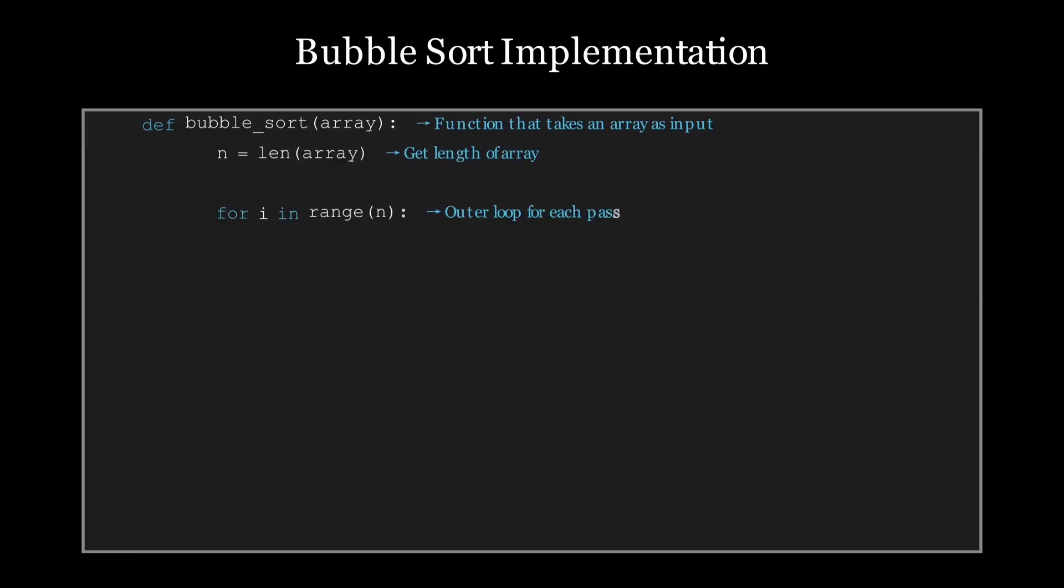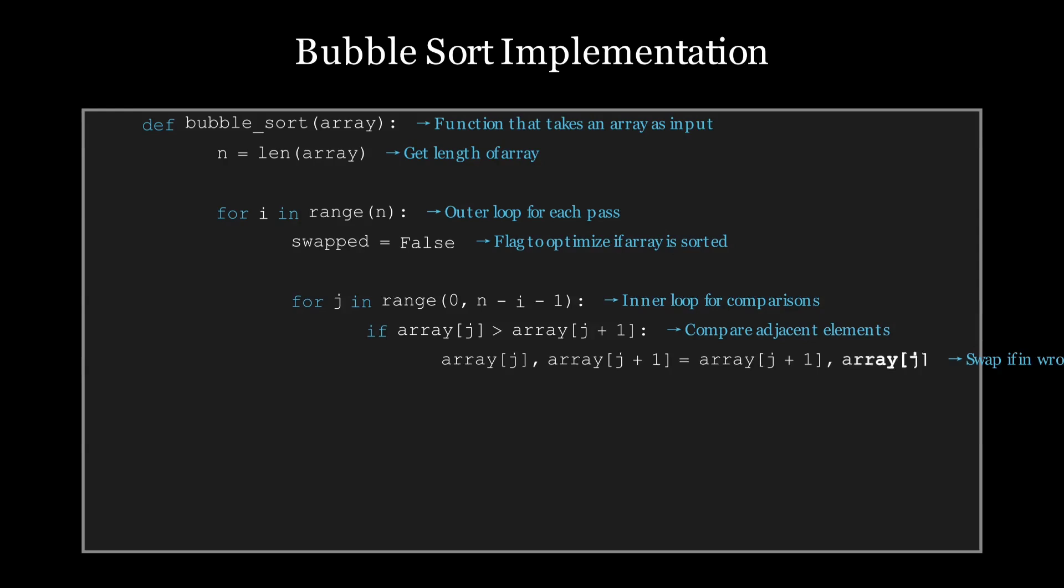Next we have two loops. The outer loop runs for each pass through the array and the inner loop compares adjacent elements and swaps them if they are in wrong order. We use the swap flag to optimize the algorithm. If no swaps occur during a pass, the array is already sorted and we can break out of the loop early.